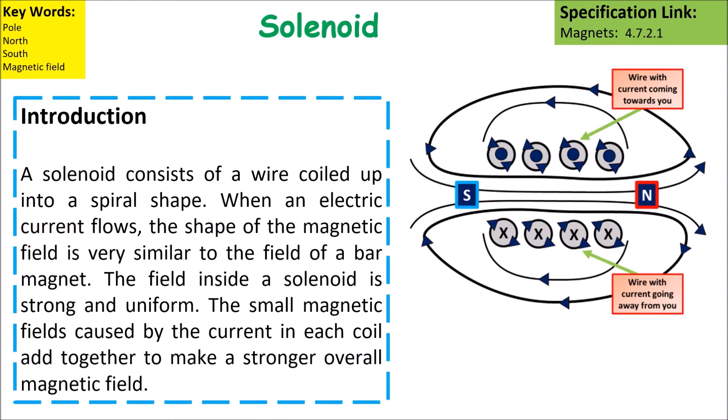A solenoid consists of a wire coiled up into a spiral shape. When electric current flows, the shape of the magnetic field is very similar to the field of a bar magnet.